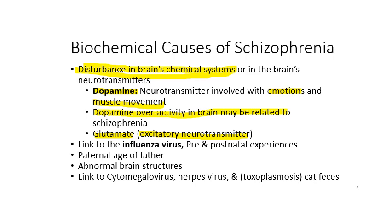There are also other biochemical and biophysiological explanations. Schizophrenia has been linked to the influenza virus, and there are theories about pre- and postnatal experiences. There is a positive correlation with the paternal age of the biological father. Other causes include abnormal brain structures, abnormalities in the ventricles, changes in brain activity, links to untreated STDs, and exposure to toxoplasmosis.